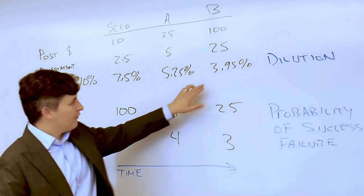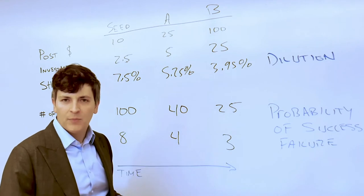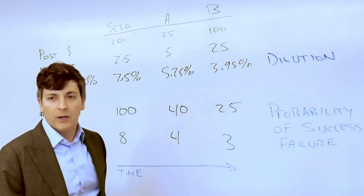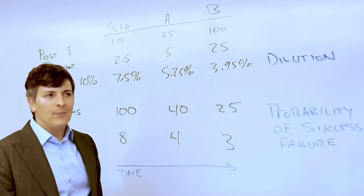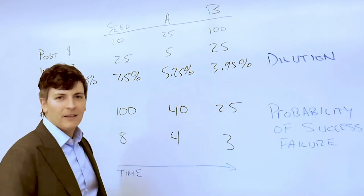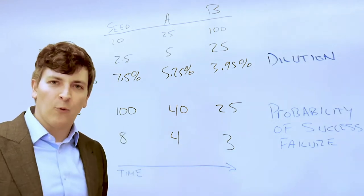Well, after dilution in Series B, $100 million post-money valuation and 4% of the fully diluted shares means that your $10 million dream is worth about 4 million.